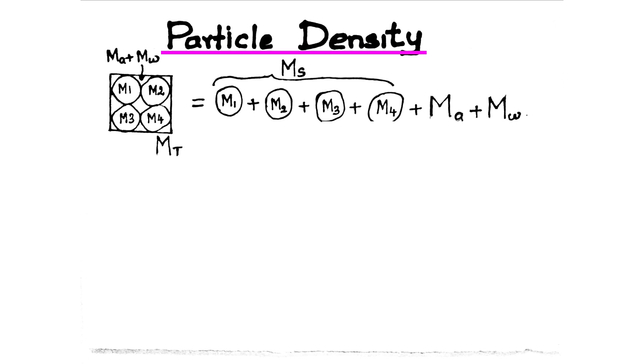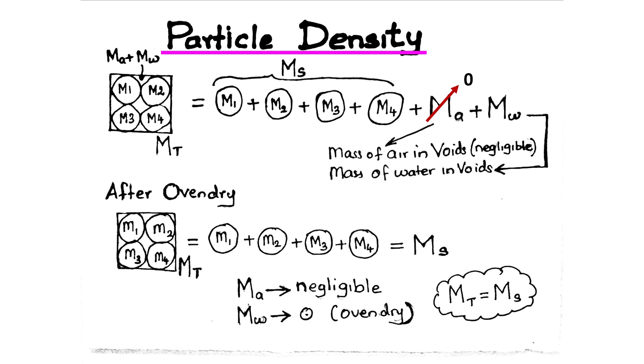Please understand this relationship. Mass of air equals zero. Total mass equals mass of water plus mass of solid. After oven-drying, mass of water is zero. Therefore, oven-dried mass equals Ms, mass of solid.